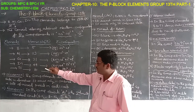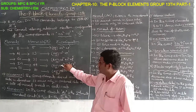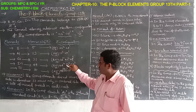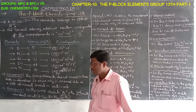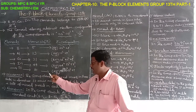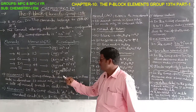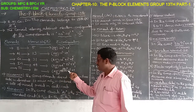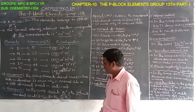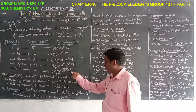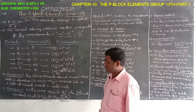Indium has atomic number 49. Its electron configuration is [Kr] 4D¹⁰, 5S², 5P¹. Thallium has atomic number 81. Its electron configuration is [Xe] 4F¹⁴, 5D¹⁰, 6S², 6P¹. All have 3 outermost valence electrons.